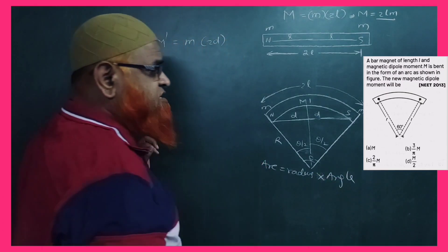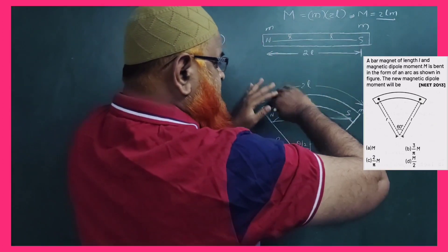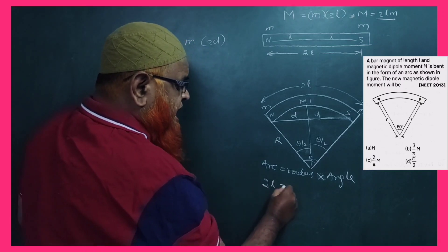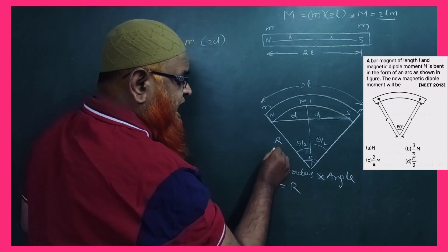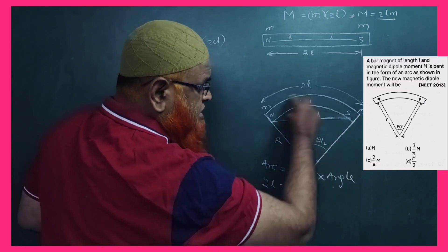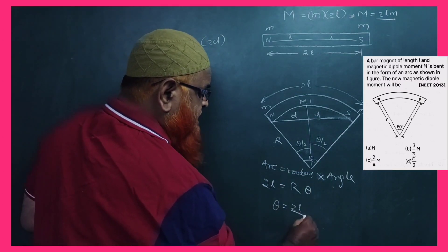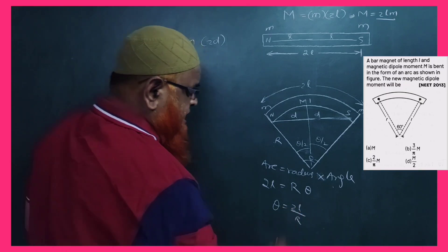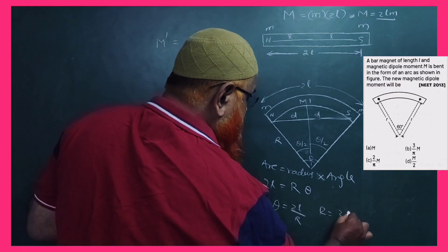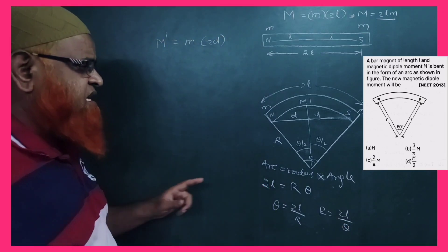Since the arc is the same magnet of length 2L, we have 2L = R × θ. Therefore, the radius R = 2L / θ. We'll use this relationship in the derivation.